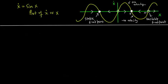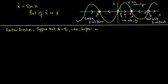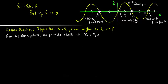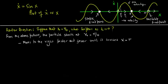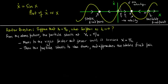What we want now is to get additional insight into this nonlinear system. Recall the earlier question: suppose the initial condition is x of 0 equal to pi over 4, then what happens as t tends to infinity? From the picture, the particle starts at x equal to pi over 4 and moves to the right faster and faster until it crosses x equal to pi over 2. Then the particle slowly slows down and approaches the stable fixed point at x equal to pi. So the limit as t tends to infinity of x of t is equal to pi.